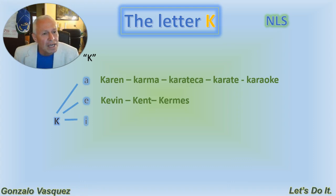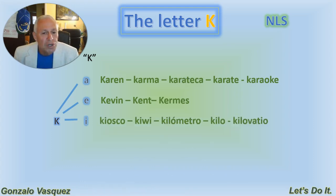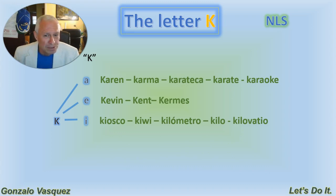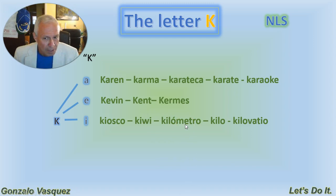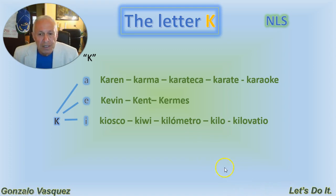Now look over here — with the E, KI. Kiosco is a gazebo; it's one of the few words we use. Kiwi as a fruit. Kilo — it's a measure for distance, for weight, and Kilovatio.